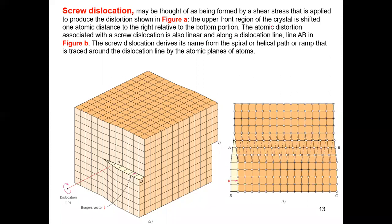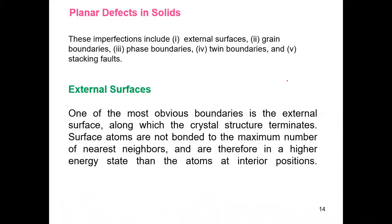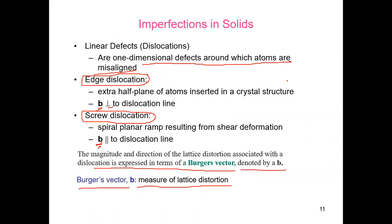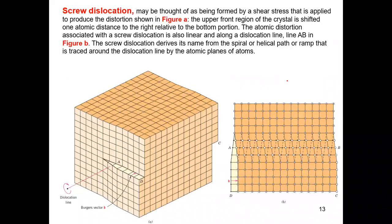An edge dislocation may also be formed by an extra half-plane of atoms included in the bottom portion of the crystal — a plane of atoms thought of as being formed by shear stress applied to produce the dislocation. The upper front region of the crystal shifts an atomic distance to the right relative to the bottom portion. The atomic distortion associated with screw dislocation is also linear and along a dislocation line. The Burgers vector is parallel to the dislocation line.